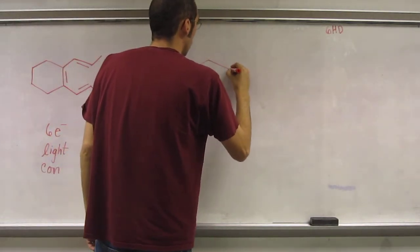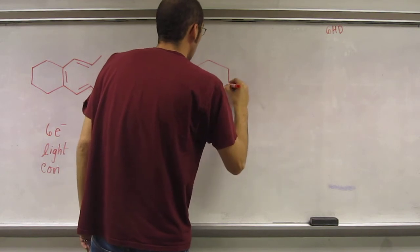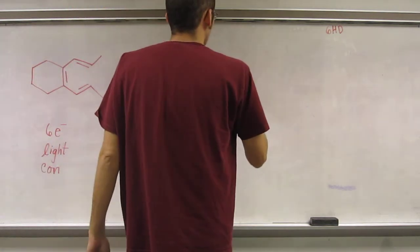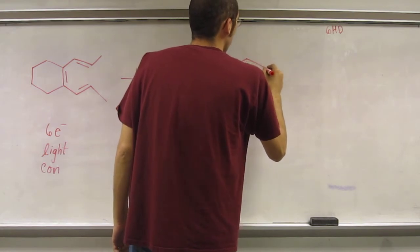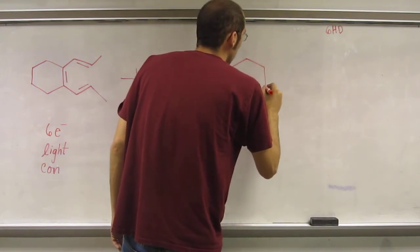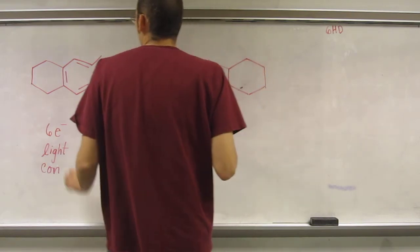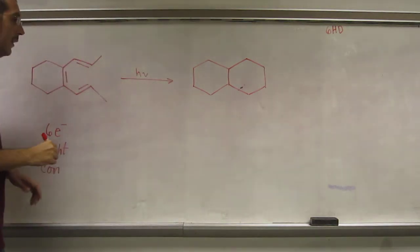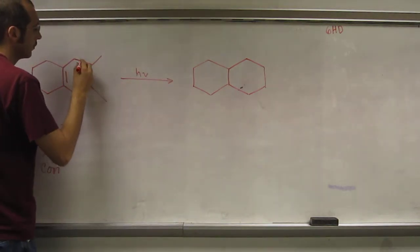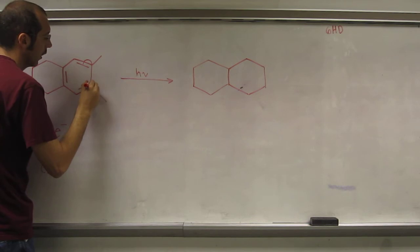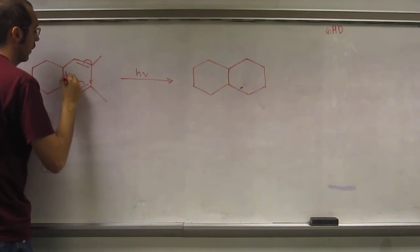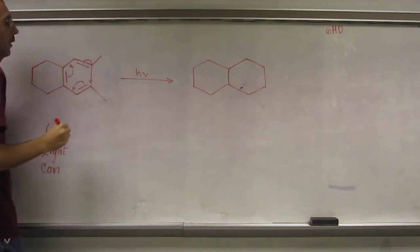So, we're going to sacrifice one of our pi bonds to make that second six-member ring, for that sigma bond. Our mechanism is actually that, that, that.